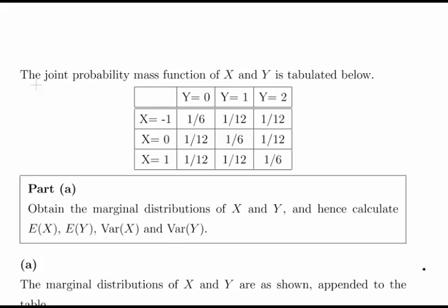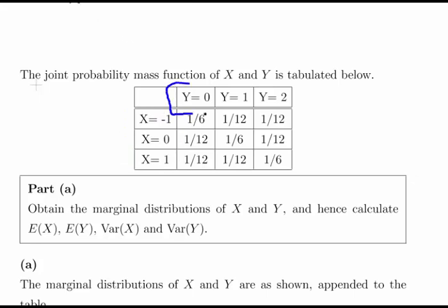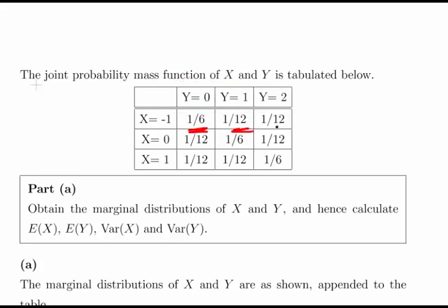In this presentation we're going to look at joint discrete random variables. We have the joint probability mass function of X and Y given in a table. X is a discrete random variable with three possible values: minus 1, 0, and 1. Likewise, Y can take the values 0, 1, and 2. The table gives all of the joint probabilities for each possible pairing of a value of X and a value of Y.